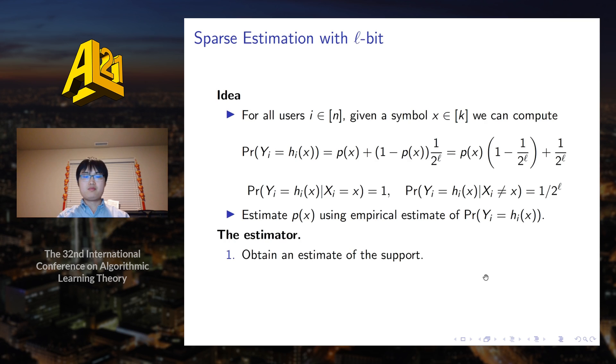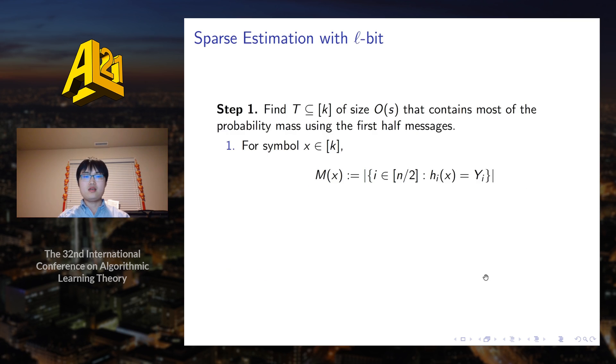The estimator in more detail consists of two stages. In the first one, we obtain an estimate of the support. Then we would estimate the probabilities of symbols inside the estimated support. For more details on stage one, for each symbol x, we obtain the count of the number of times that yi, the messages, matches with hi of x, the function output. Then we would simply select two S symbols with the largest count.